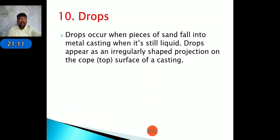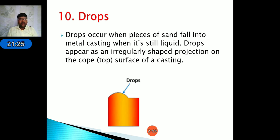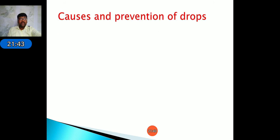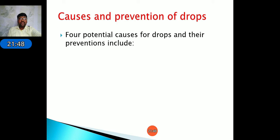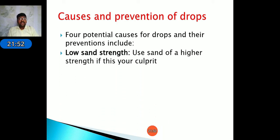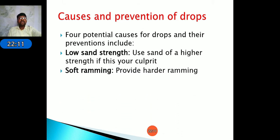Drops occur when pieces of sand fall into the molten metal while still liquid. At the time of the molding process, some mold particles fall onto the molten metal, forming extra surface projections or bubble-type structures known as drops. Causes and prevention: low sand strength — use sand of highest strength; soft ramming — provide hard ramming to increase strength and stiffness of molding sand.